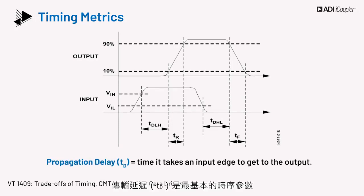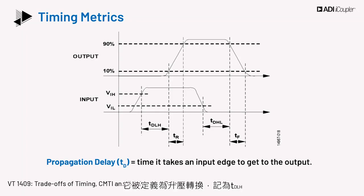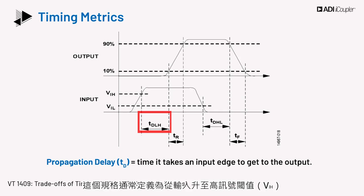Propagation delay, TD, is the most basic timing parameter. It is defined as the time it takes an input edge to reach the output. It is defined for the rising transition, denoted as TDLH, which indicates time delay for low to high. This spec is usually defined as the time between the input reaching the threshold for high signal, VIH,